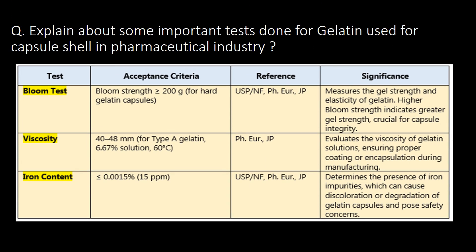Explain about some important tests done for gelatin used for capsule shells in the pharmaceutical industry. Bloom test, viscosity, and iron content are the three important tests done for gelatin used for capsule shells. You can refer to the table for test acceptance criteria, reference, and significance for these three tests.